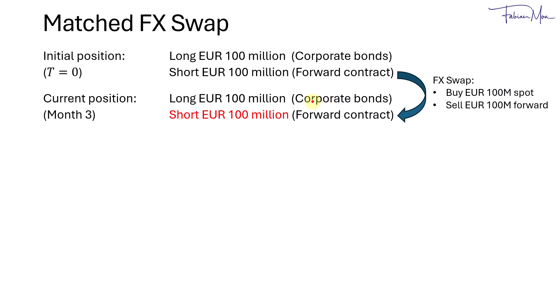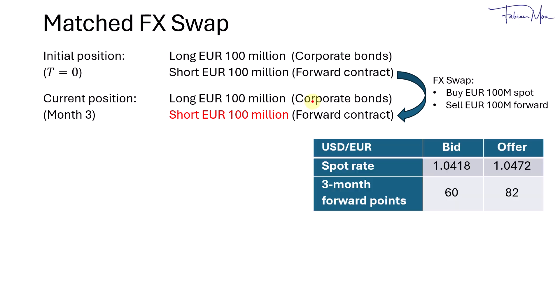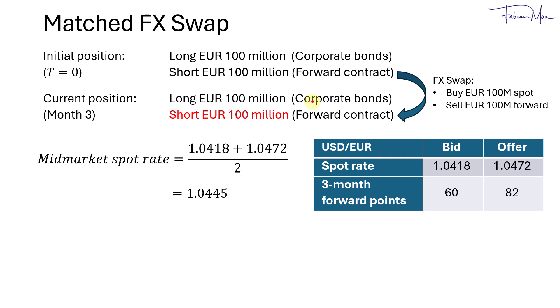For the spot rate, we would use the mid-market spot rate. That involves finding the average of the bid and the offer spot rate. So we take 1.0418 plus 1.0472, divide that by 2, and that gives us 1.0445.